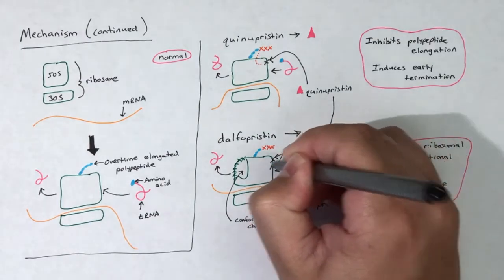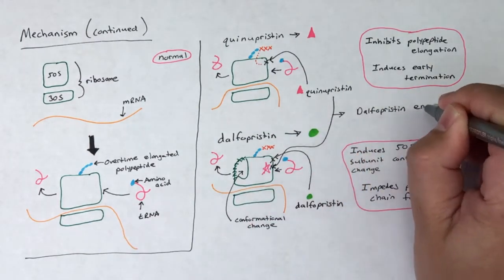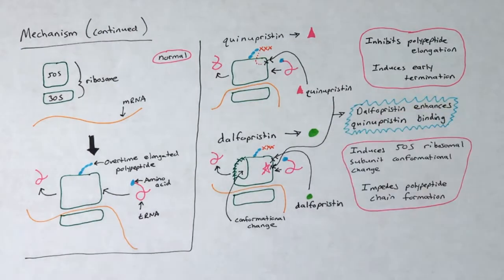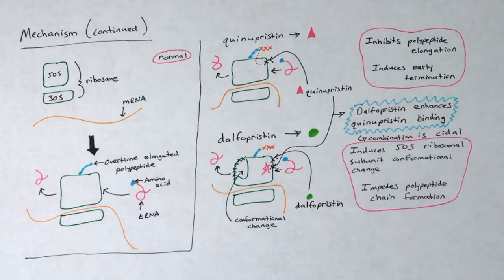In addition, Dalfopristin impedes the polypeptide chain formation. The combination of Quinupristin and Dalfopristin results in a bactericidal antibacterial effect.